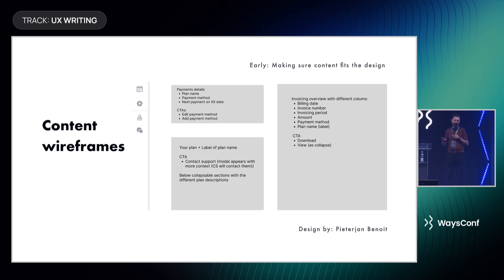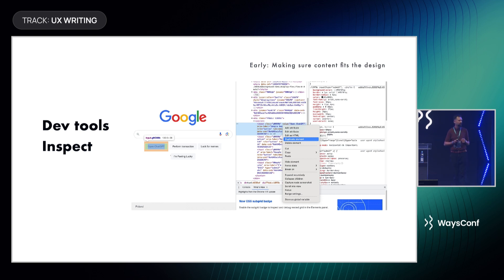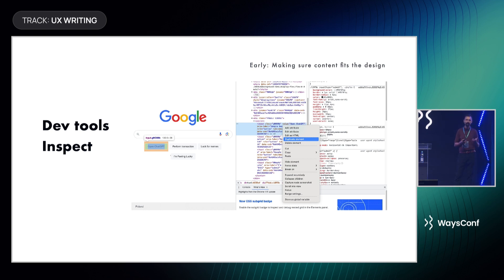Here's an example of a similar thing done directly in Figma — you don't need hi-fi. You can draw a rectangle, insert some text, and make sure all designs communicate the same things. You can also use DevTools to understand how copy changes could work in the design — add or change a CTA. There's also a Design Mode plugin for Chrome that allows you to do this even more effortlessly.